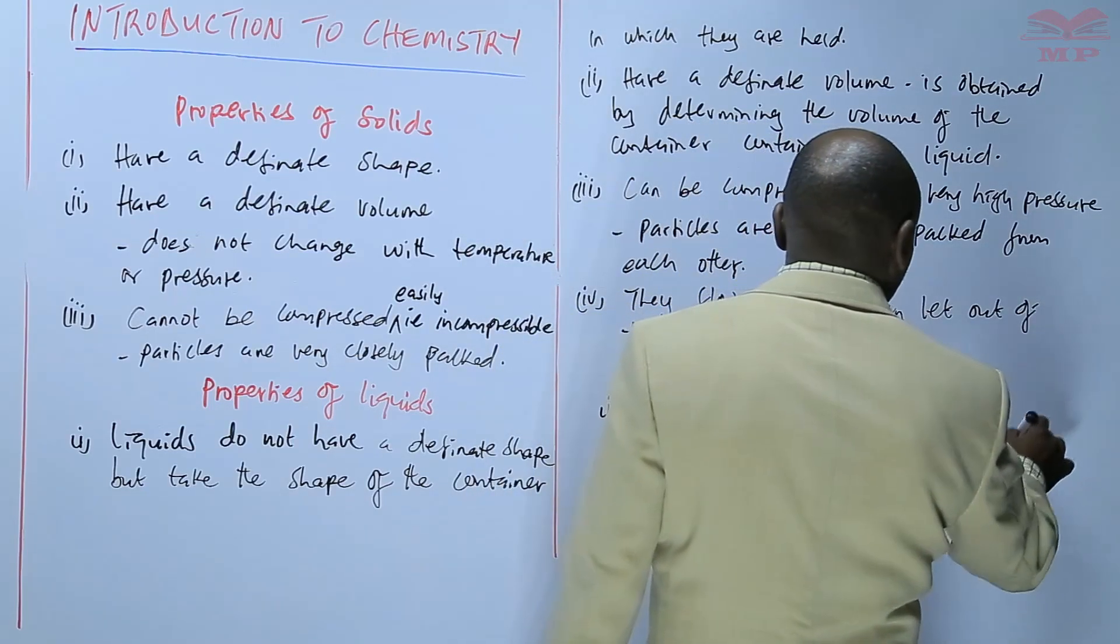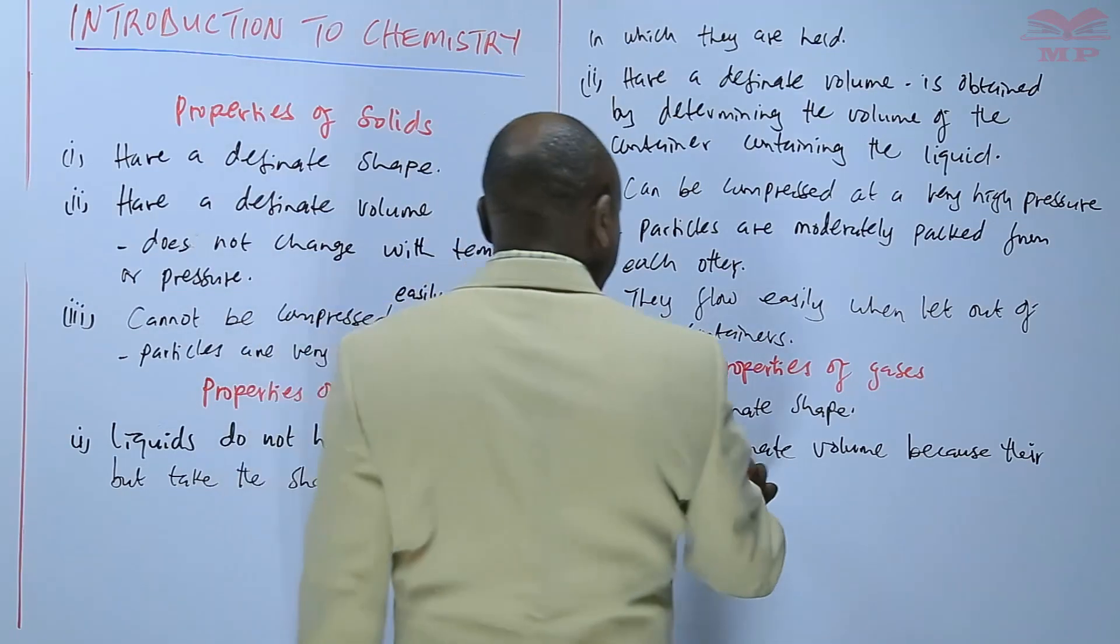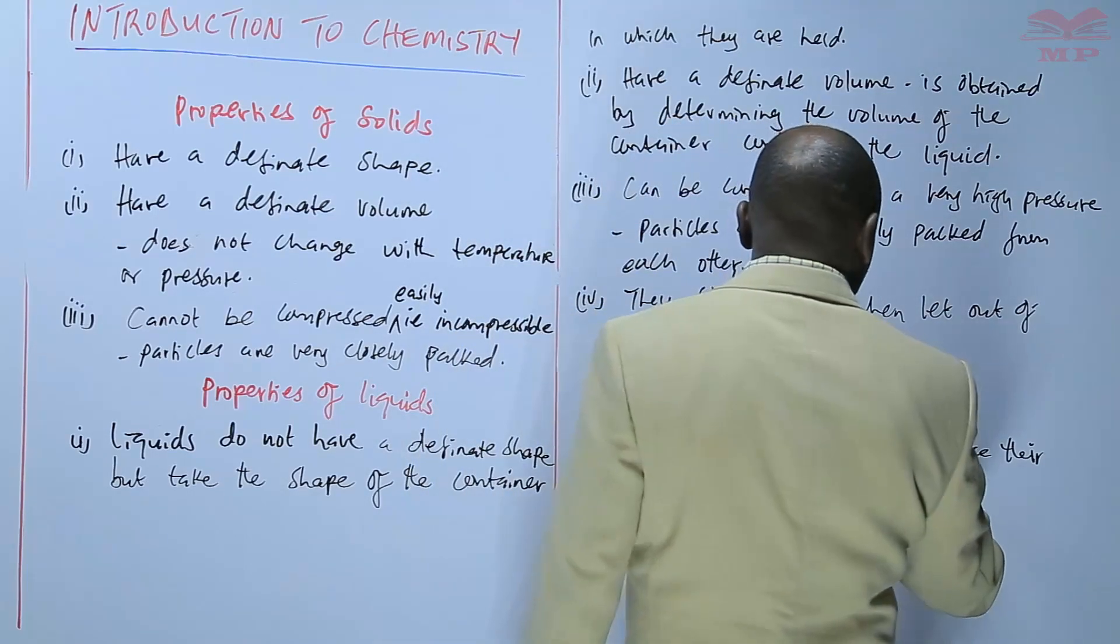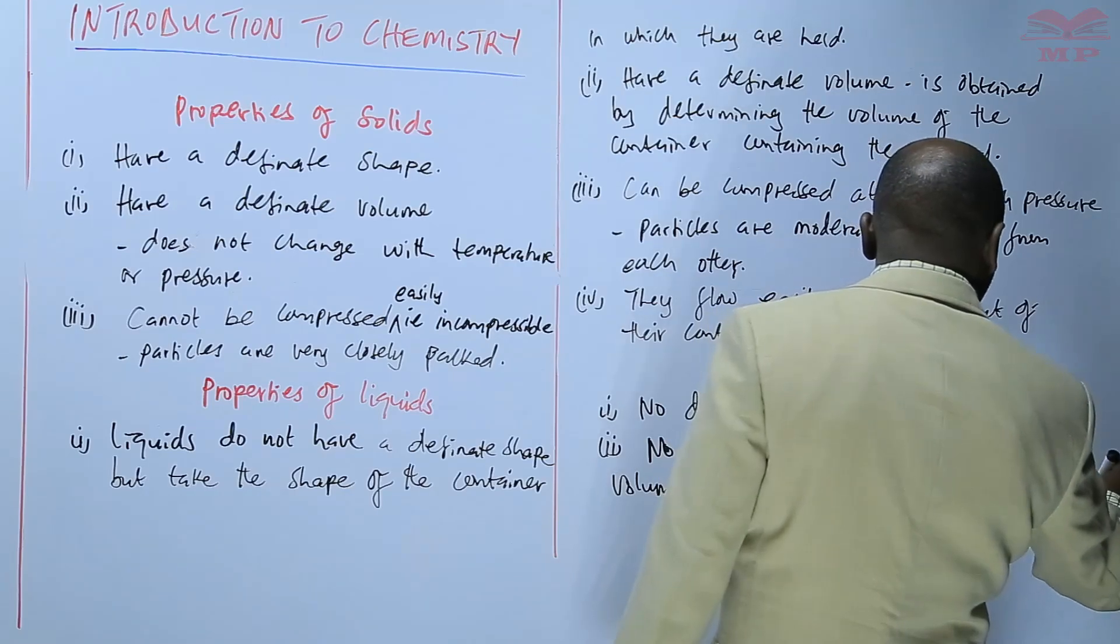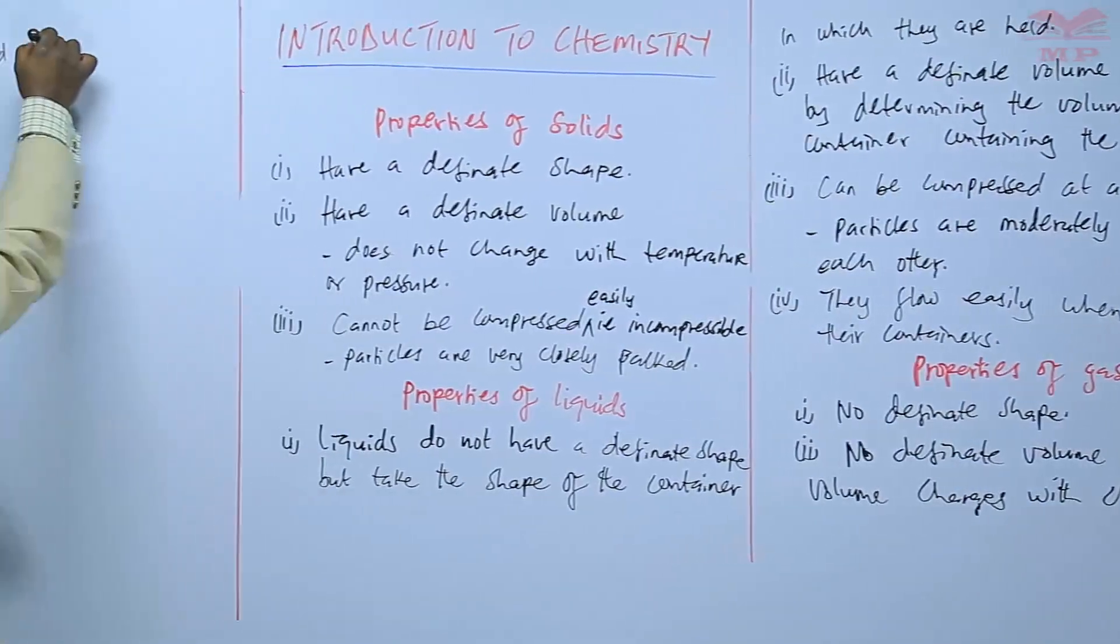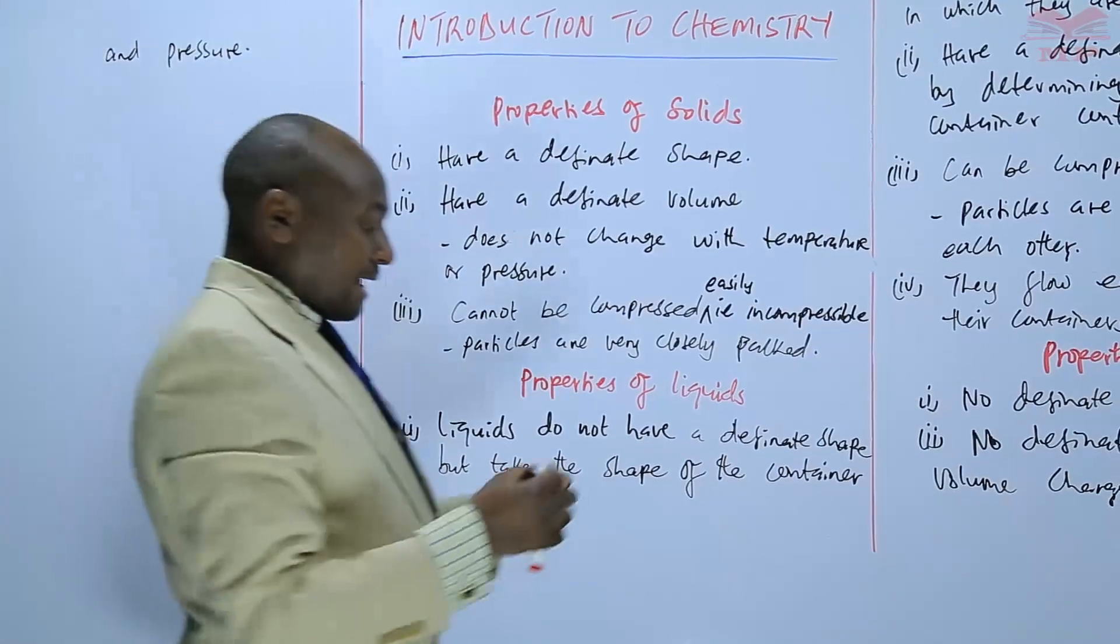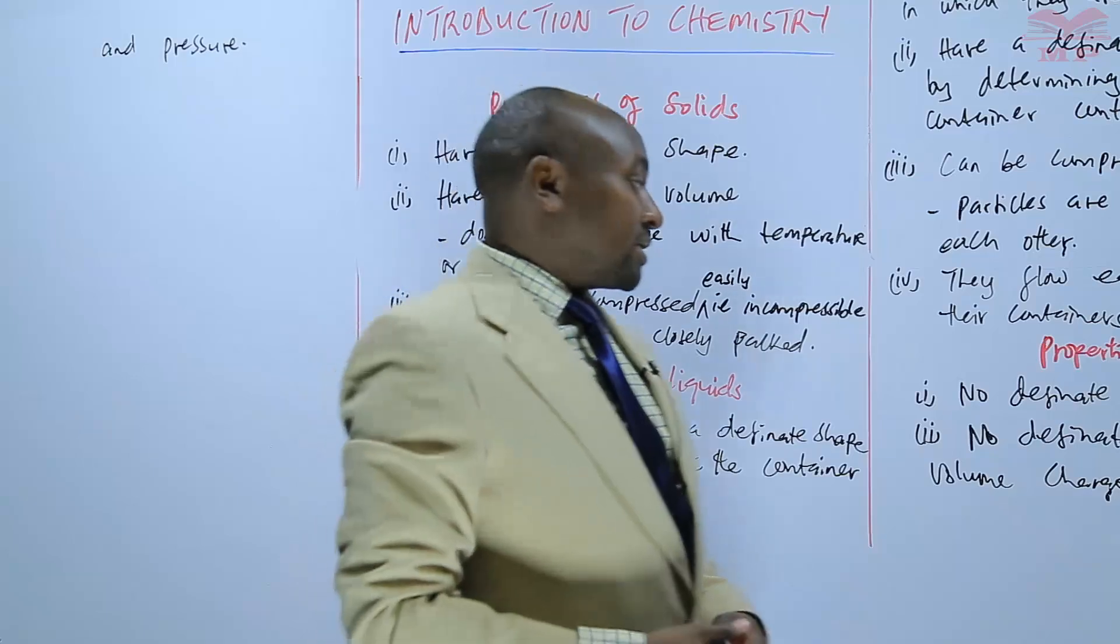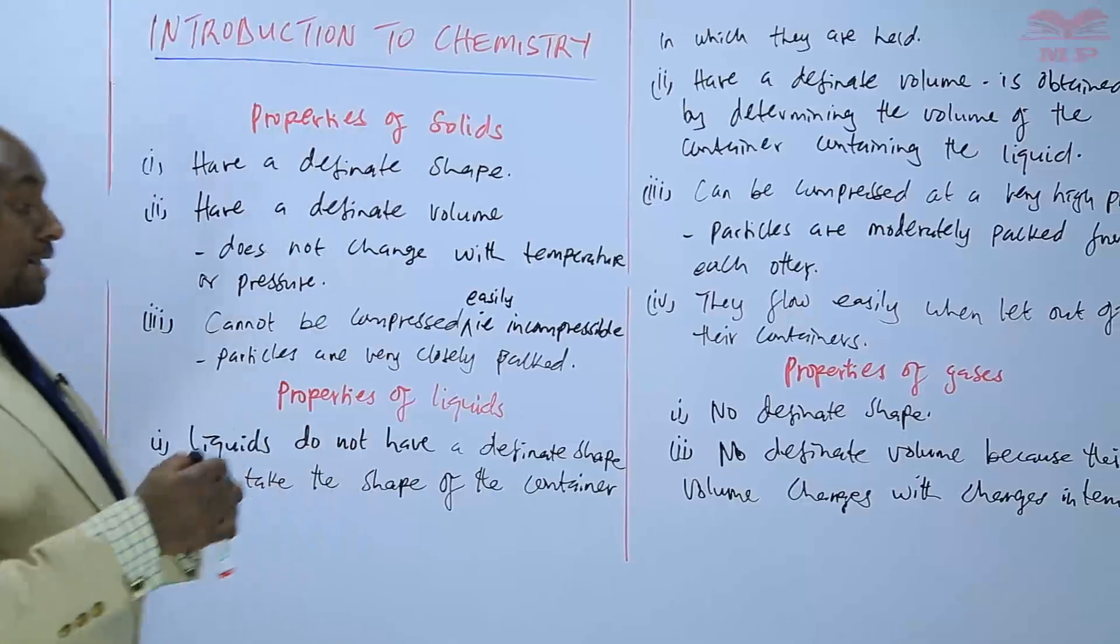Because their volume changes with changes in temperature and pressure. So basically that's why a gas cannot occupy a definite volume. Because the moment the temperature changes or the pressure changes, then the volume of the gas will equally change.